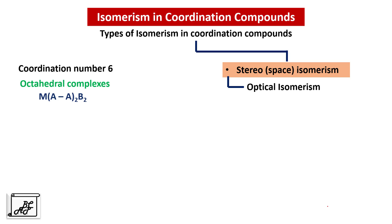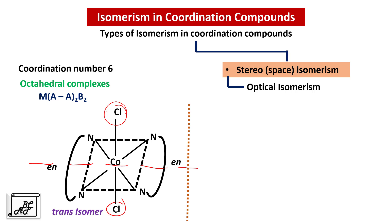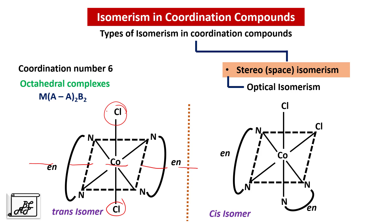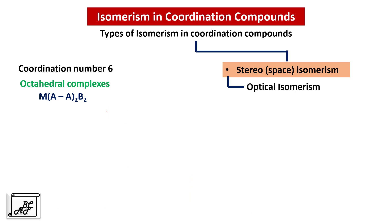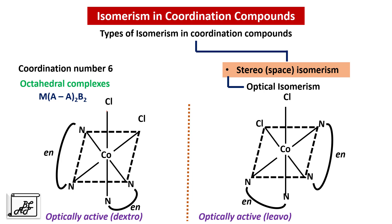Let us move to MAA2B2 type complexes. Pay attention to the position of the two chlorine atoms: when the two chlorine atoms are on the opposite side, there is a plane of symmetry passing through the molecule dividing it into two halves that are mirror images of each other. This trans isomer does not exhibit optical isomerism — because of the presence of a plane of symmetry, it is optically inactive. The cis isomer of this complex will not have any plane of symmetry, line of symmetry, or center of symmetry — it is optically active. The two enantiomers of the cis isomer are the dextro and levo forms, and both are optically active.